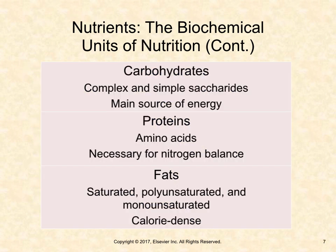Carbohydrates are complex and simple saccharides and provide our main source of energy. Proteins are amino acids necessary for nitrogen balance. Fats are categorized as saturated, polyunsaturated, and monounsaturated. They are calorie-dense, meaning they provide a large amount of calories in a small amount of food.